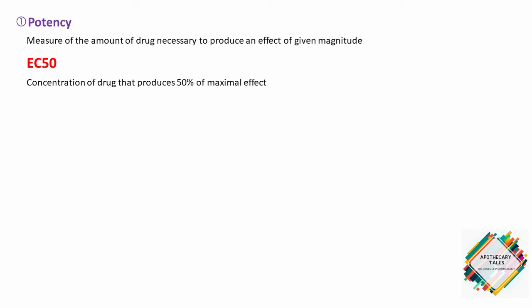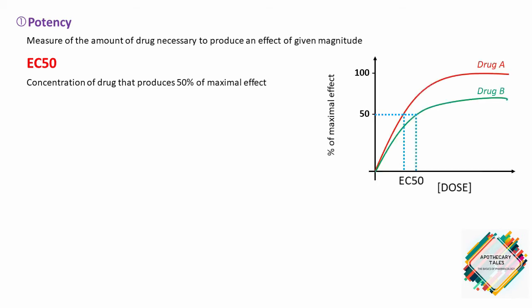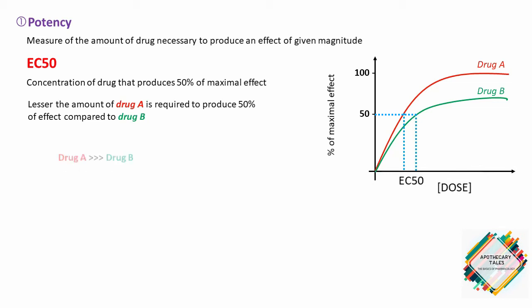Observing the graph, the EC50 for drug A and drug B indicates that drug A is more potent than drug B, because a lesser amount of drug A is needed compared to drug B to obtain the 50% effect. For instance, if drug A at a concentration of 10 mg produces the 50% effect, then drug A is more potent than drug B because it produces the same effect at a lower concentration.